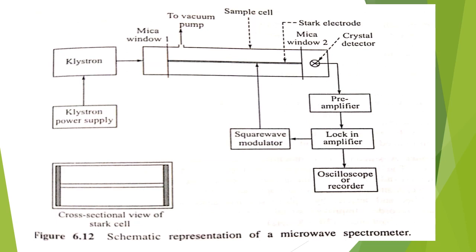The sample cell has a provision to pump out the gaseous molecules. In the middle of the sample cell, we have a Stark electrode fixed halfway between the metallic sample cells. And we have a crystal detector made up of silicon crystal, which detects the radiation. From the crystal detector, the modulated signal is amplified and then it is fed into the oscilloscope and then recorder.